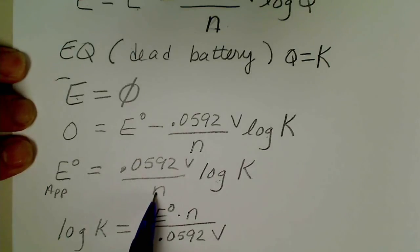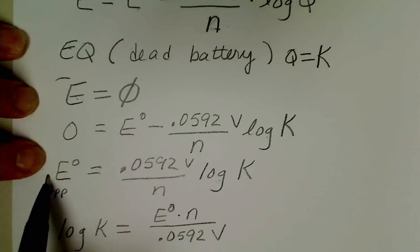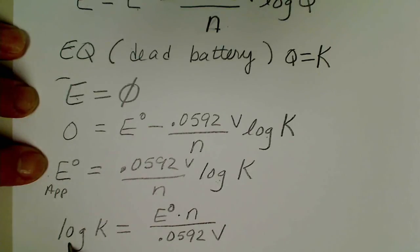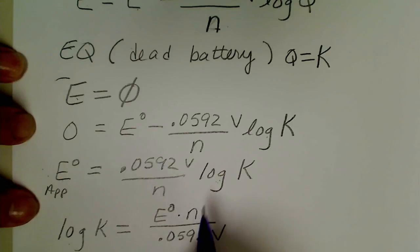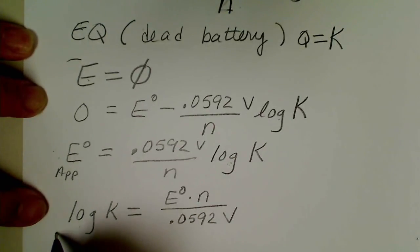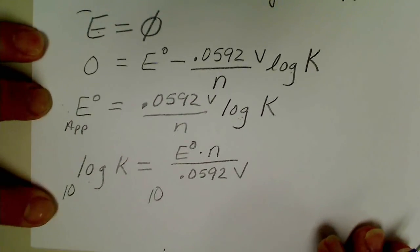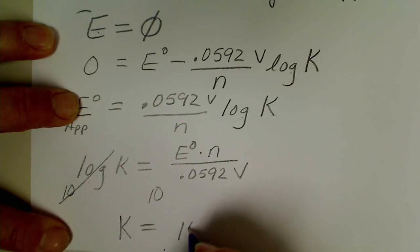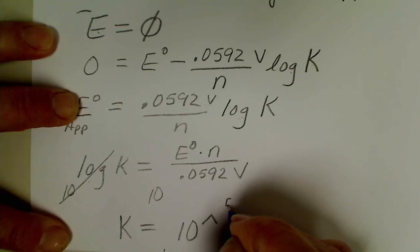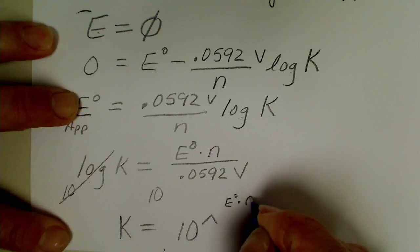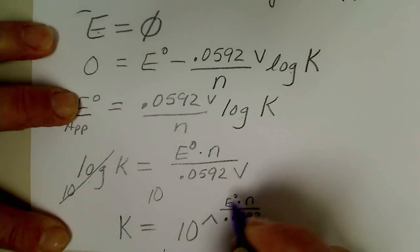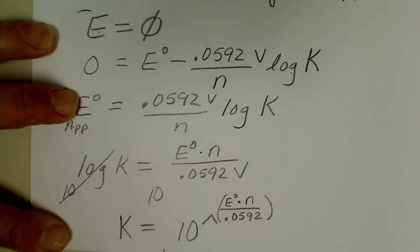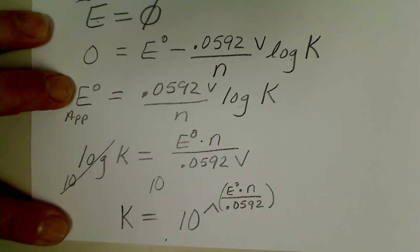So if I get log K by itself I multiply both sides of the equation by n, I divide both sides of the equation by 0.0592. And then to get rid of the log I put a ten underneath both sides so we could calculate the equilibrium expression. Or the equilibrium value would be ten raised to the product of the E-cell times the number of electrons transferred divided by 0.0592, and that would give us the value for the equilibrium constant.